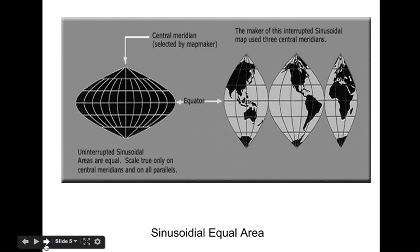This type of map was first used in 1570. It is also called a pseudo-cylindrical map because it is mathematically based on a cylinder tangent to the equator.